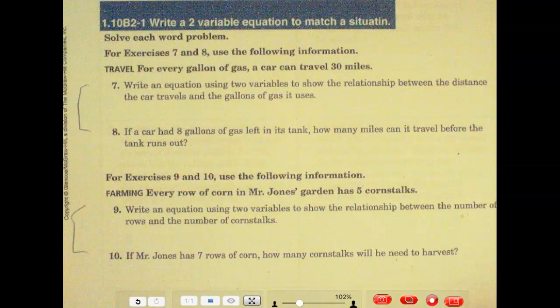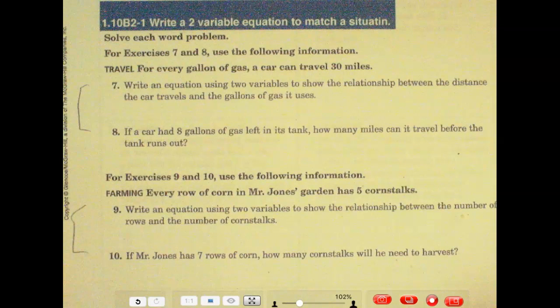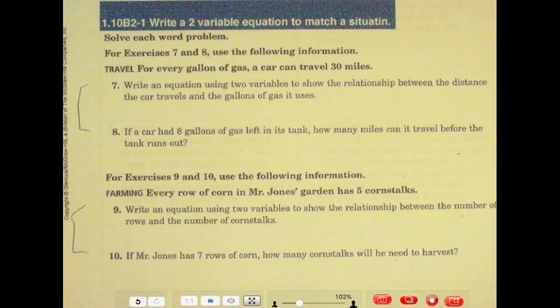Let's see. For every gallon of gas, a car can travel 30 miles. Write an equation using two variables to show the relationship between the distance the car travels and the gallons of gas it uses.